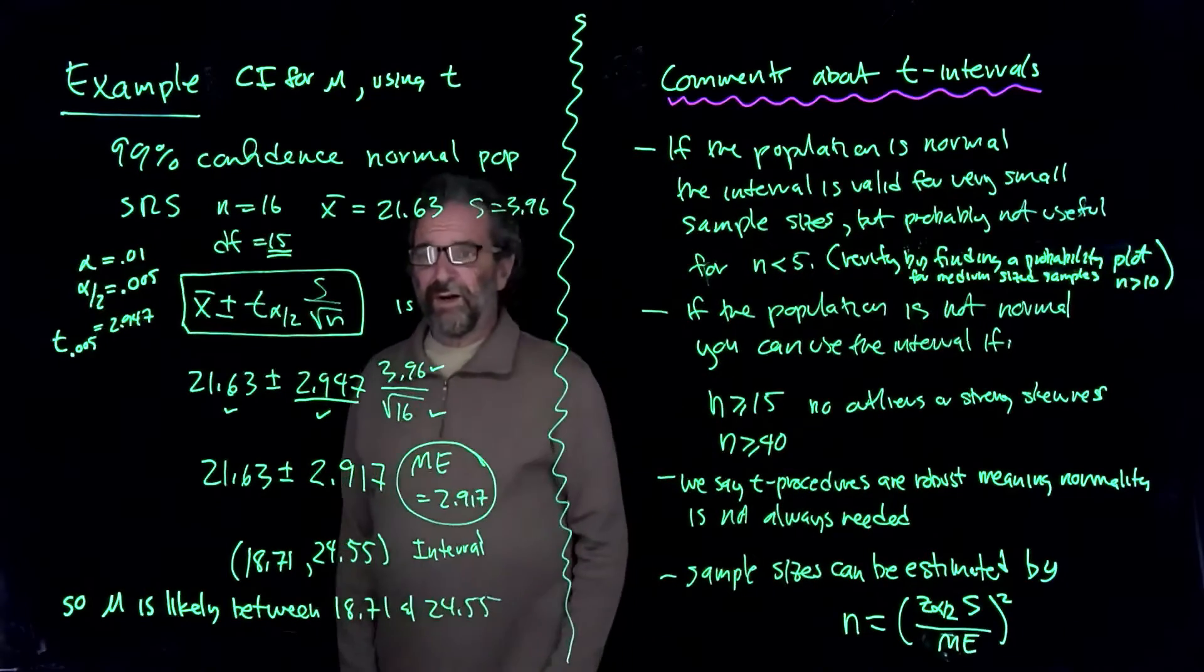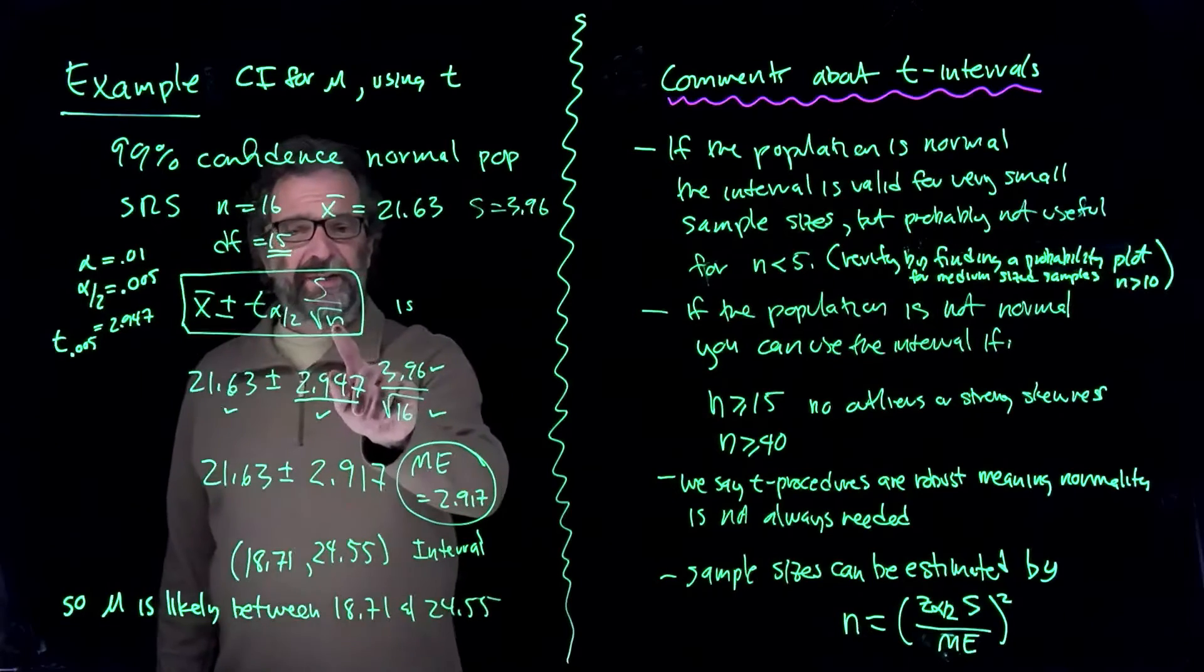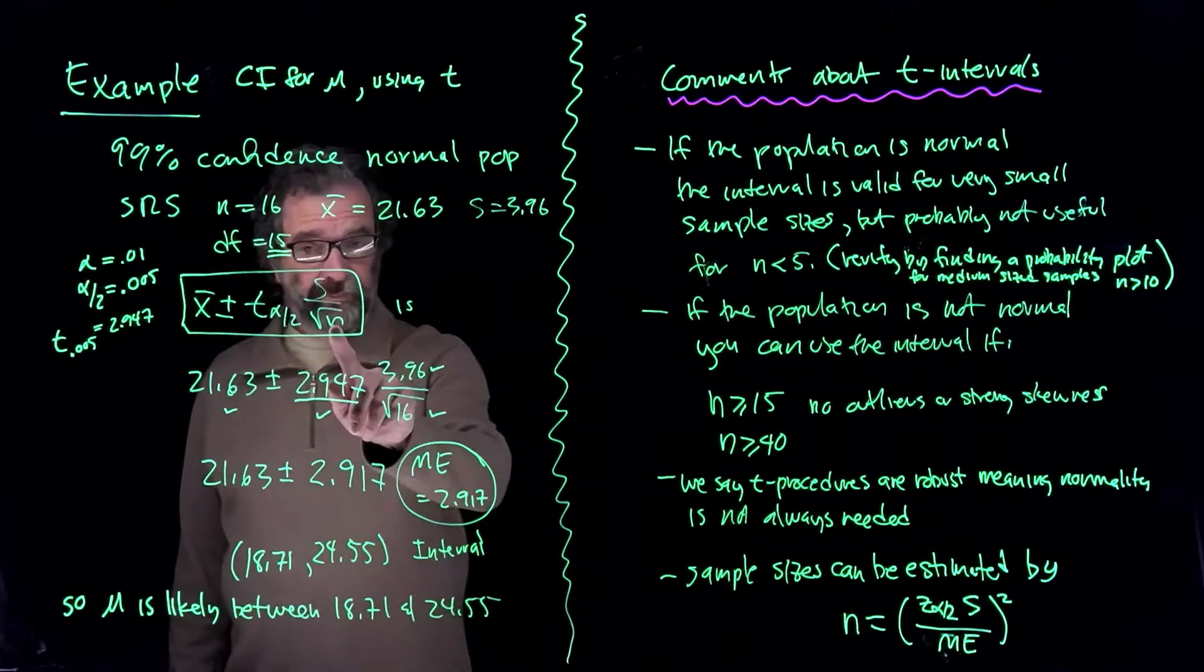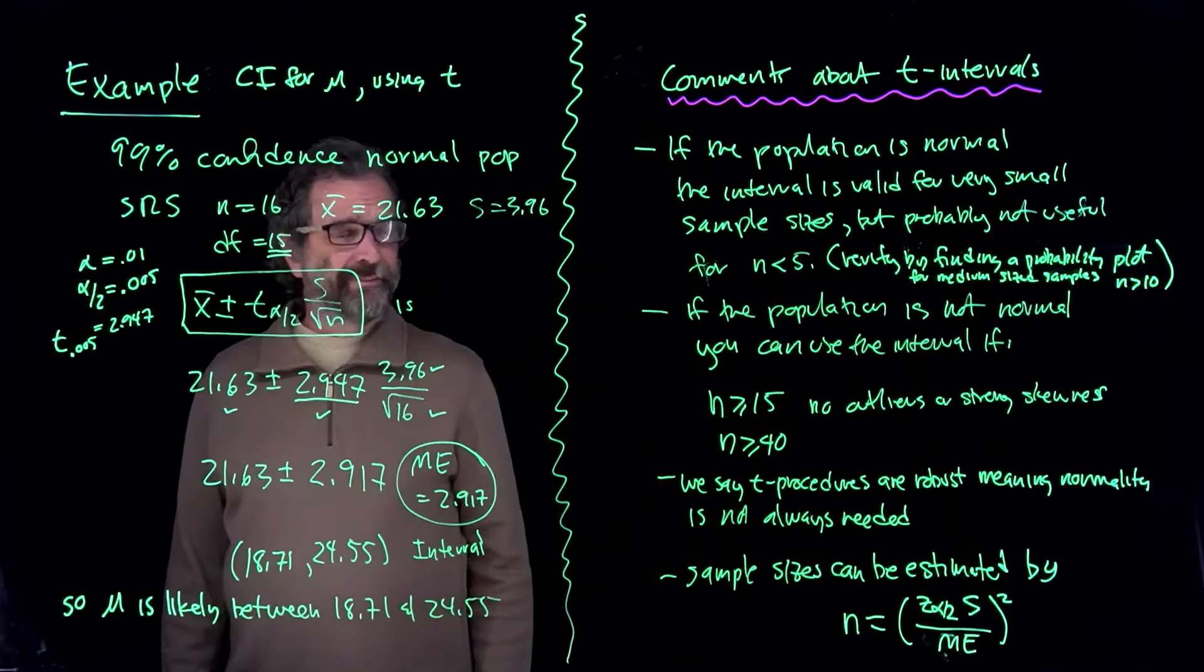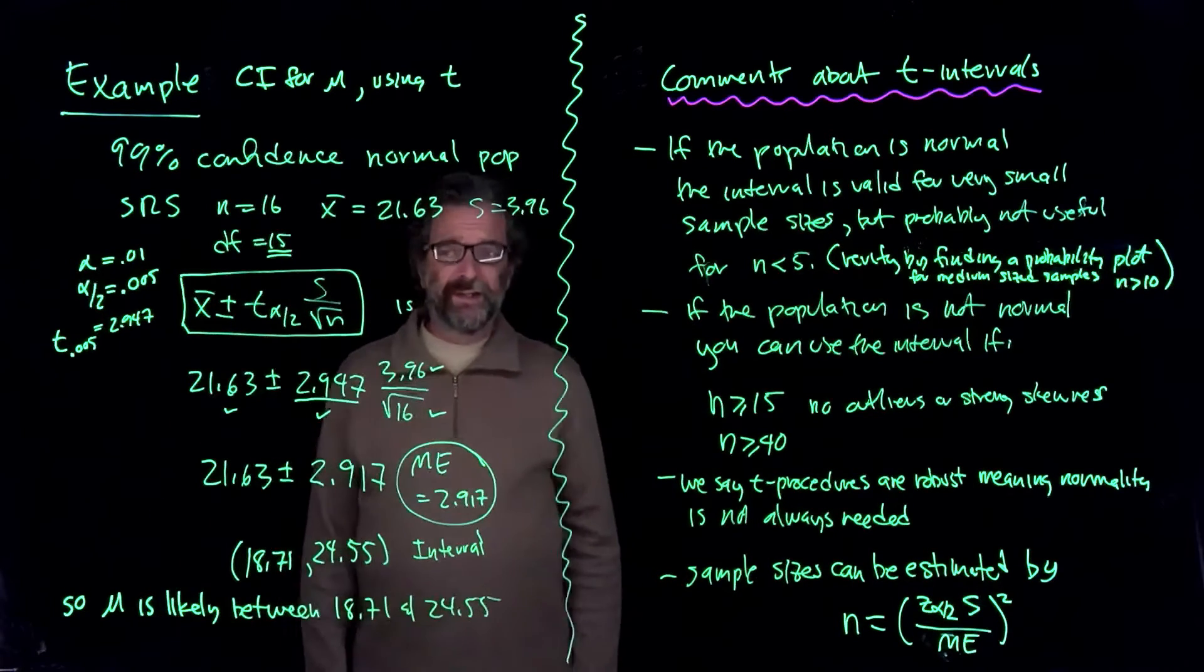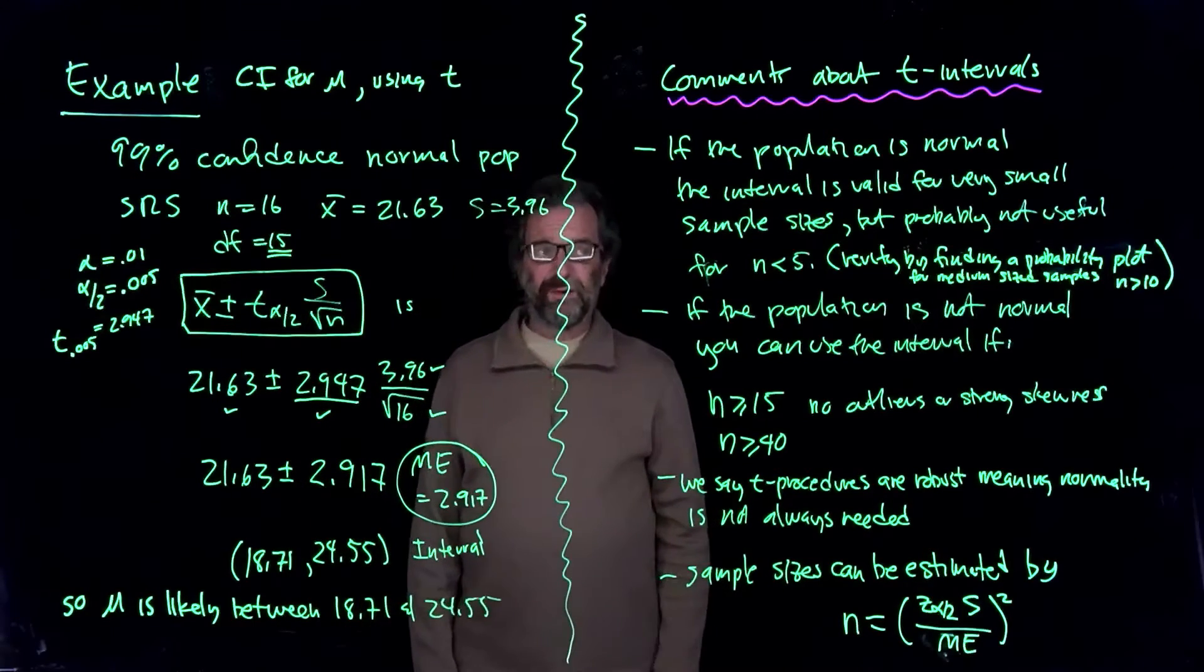And what happens there, though, is since that number is in the denominator, the size of the interval becomes so large it might not be useful to you. So it might be so big that it's not giving you information that you can use for anything.